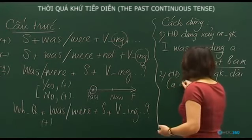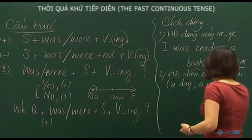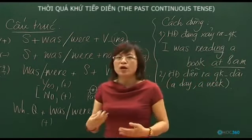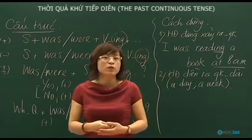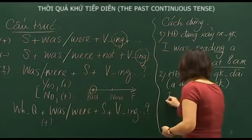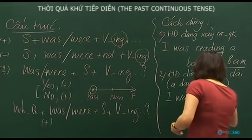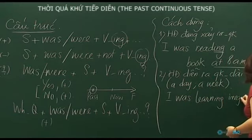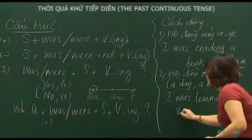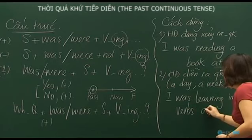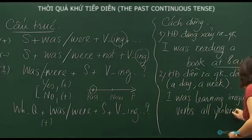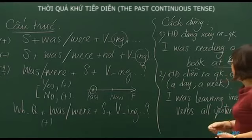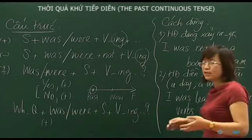Common time expressions for this usage include: a day, the whole day, a week, last week. For example: 'All of yesterday I was learning irregular verbs.' — 'I was learning irregular verbs all yesterday.' This describes an action that occurred over a relatively long period.